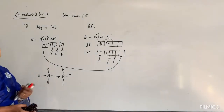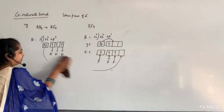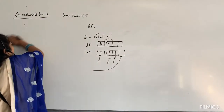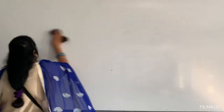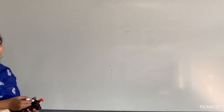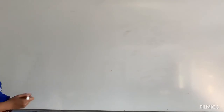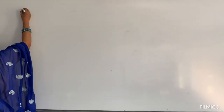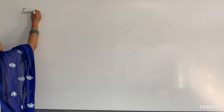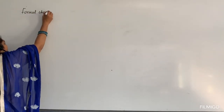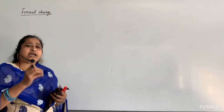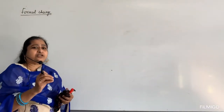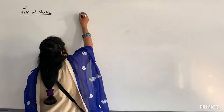When the lone pair of electrons is completely transferred from one atom to another, the bond formed is called a coordinate bond, represented by an arrow mark. Now coming to the next very important topic — formal charge.